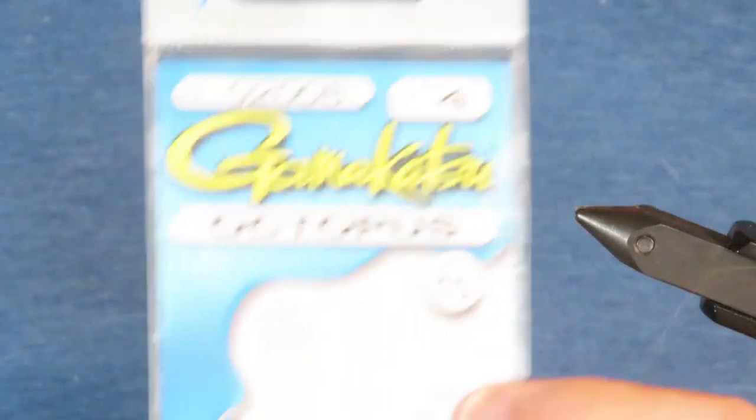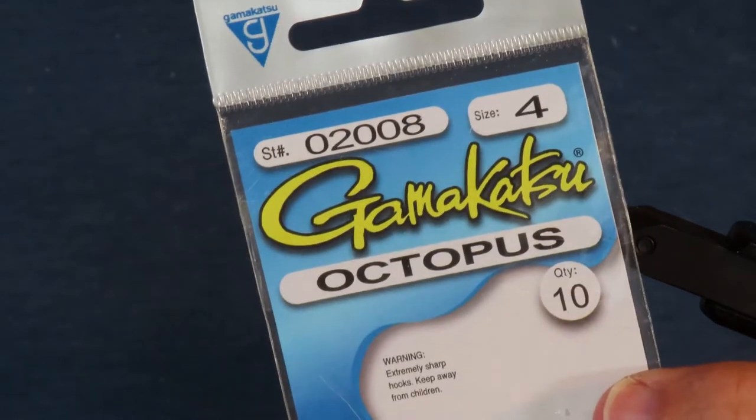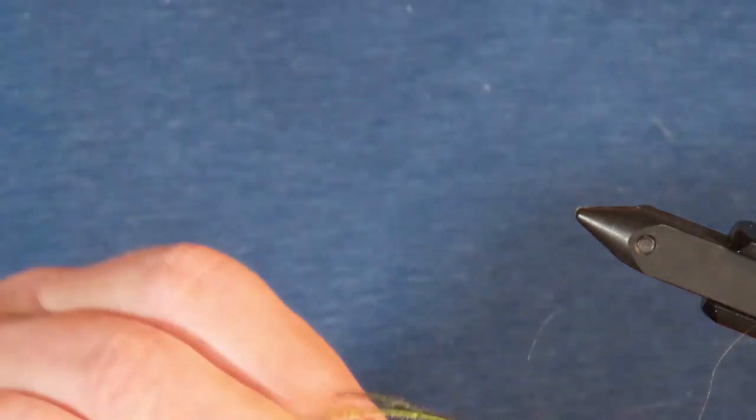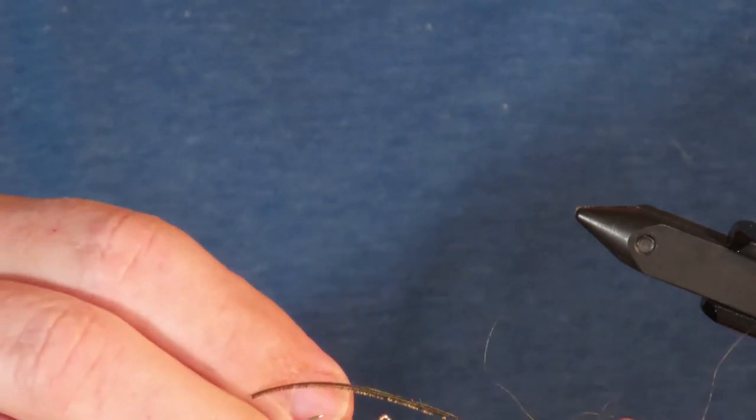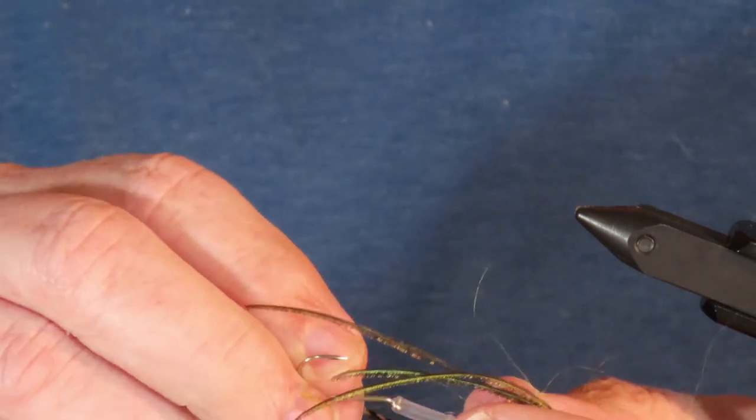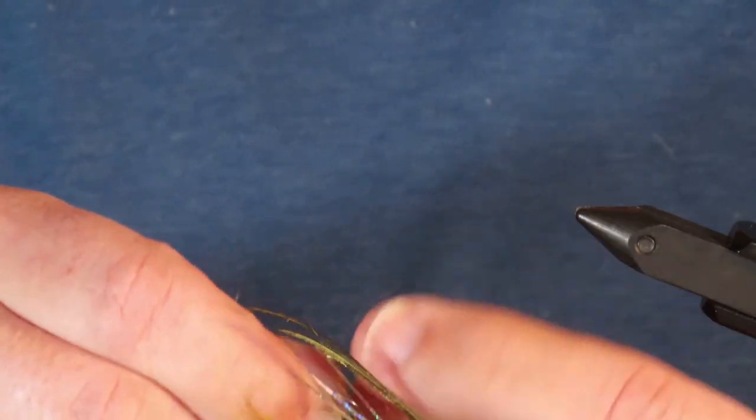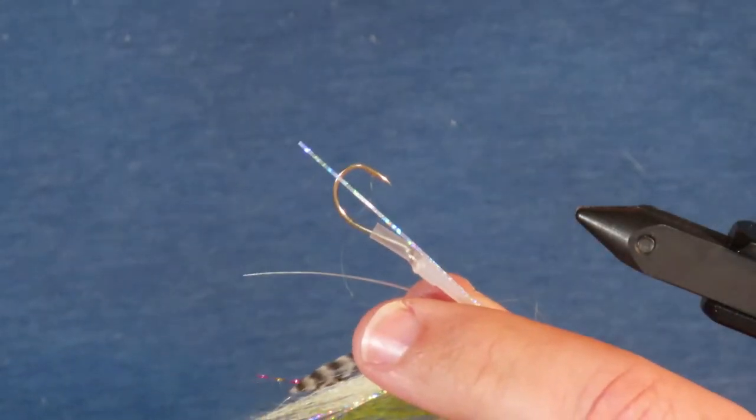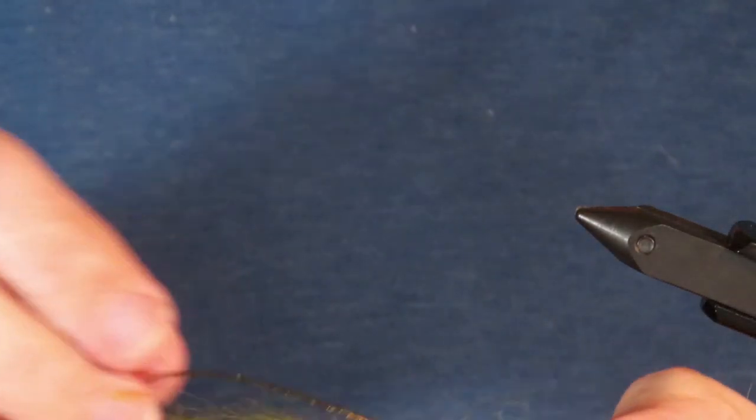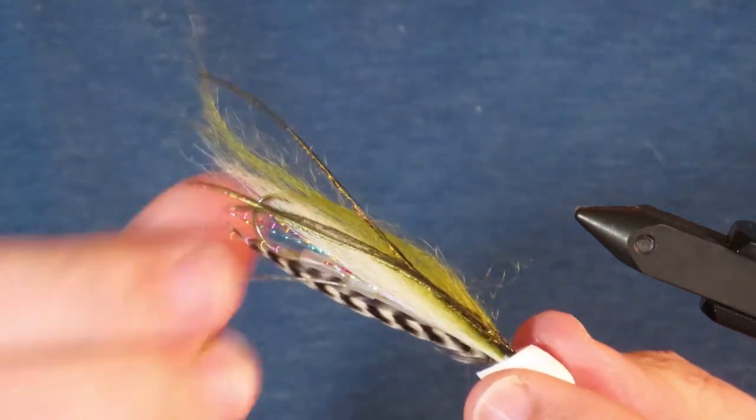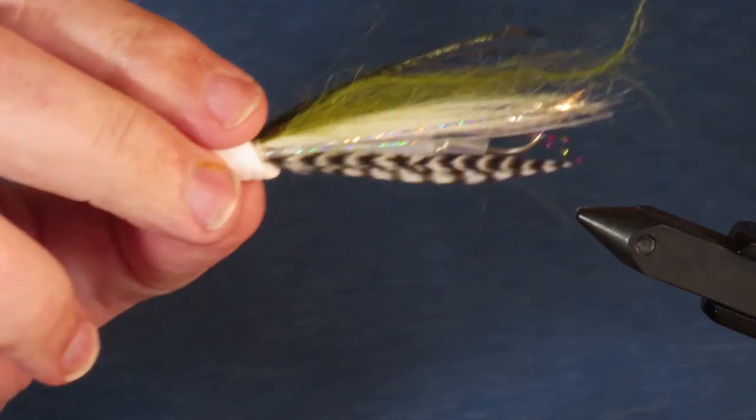The best hook to use is the Gamakatsu Octopus in size 4 or 6. You can get these in several different finishes. I'm going to use the nickel silver one. Now of course, you tie your tippet onto the hook first. I'm just putting this together for demonstration purposes. You need the point of that hook to be facing up, pointing towards the top of the wing where the peacock curl is. And that's the finished fly.